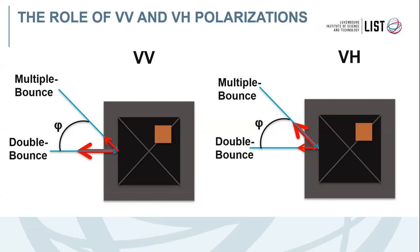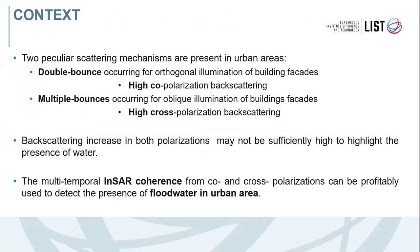This is what happens in the case of co-polarization data. If we look at cross-polarization data, we have the opposite behavior, so that when the line of sight is not orthogonal, the intensity of the backscattering is higher. It therefore makes sense to take advantage of both channels to detect the presence of water in front of a building. The increase of backscattering is not so large looking just at intensity, because the only thing that changes is the dielectric constant of water with respect to the surface before, while the roughness remains almost constant.